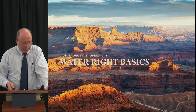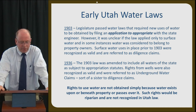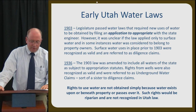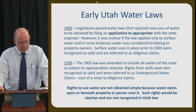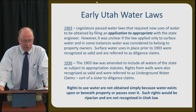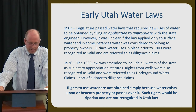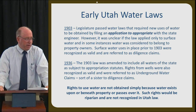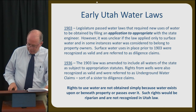Getting into some of the basics of water law: in 1903, the legislature passed water laws requiring new uses of water to be obtained by filing an application to appropriate with the state engineer. Surface water uses in place prior to 1903 were recognized as valid and referred to as diligence claims. Either way, a water right must be established if water is diverted and put to use. In 1936, the law was amended to include underground water claims or wells. Rights to use of water are not obtained simply because water exists upon or beneath property or passes over it — such rights would be riparian and not recognized under Utah law.